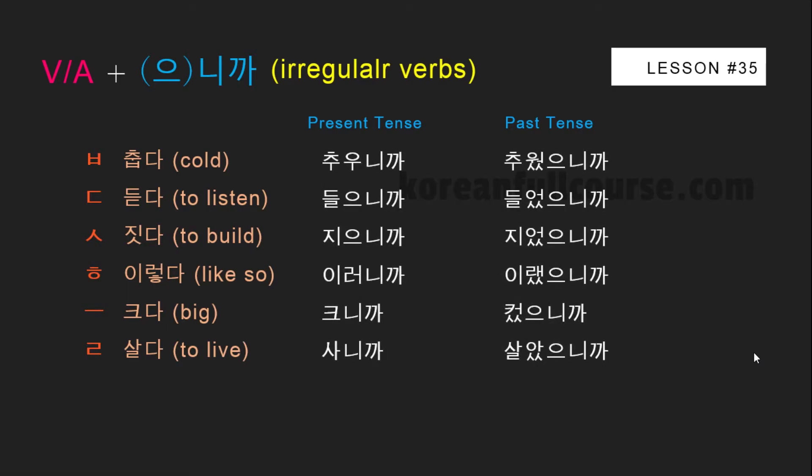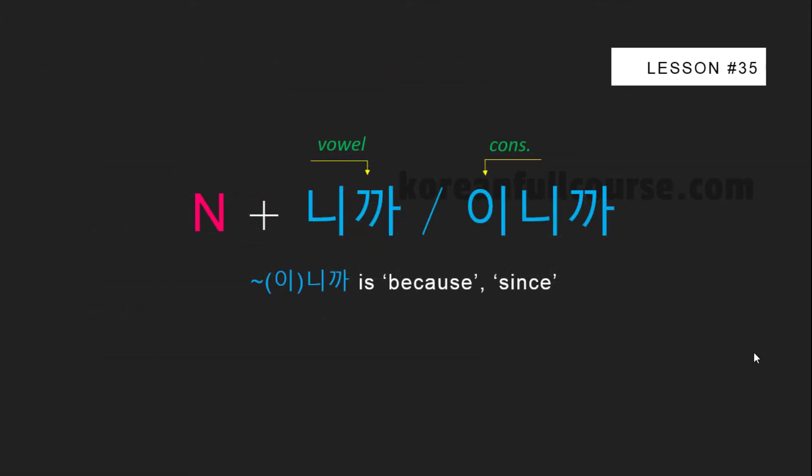Now let's see how to combine this grammatical construction with irregular verbs and adjectives in the present and past tenses. Pause the video and try to conjugate these for yourself: 주우니까, 들으니까, 지우니까, 이러니까, 크니까, 사니까, 주웠으니까, 들었으니까, 지웠으니까, 이랬으니까, 컸으니까, and 살았으니까. If you want to learn more about irregular verbs and adjectives, watch lesson number 29.